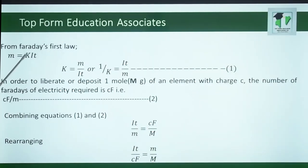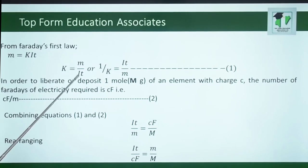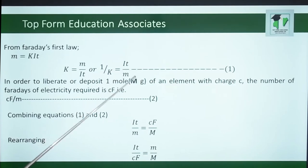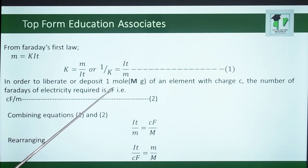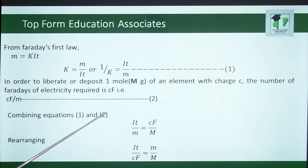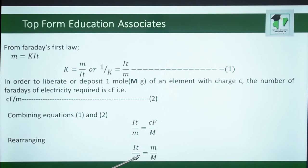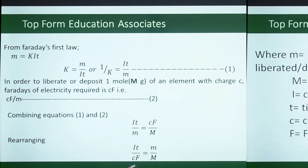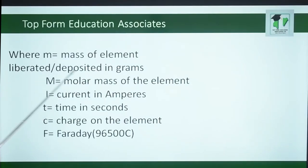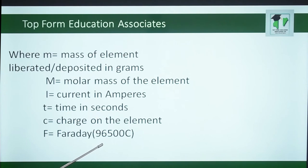From Faraday's first law, M equals KIT, and K equals M over IT, so 1 over K equals IT over M — call this equation 1. To liberate or deposit 1 mole of an element with charge C, the Faradays required is CF over M — call this equation 2. Combining equations 1 and 2: IT over M equals CF over capital M, which rearranges to IT over CF equals small m over M. Where m is the mass deposited in grams, M is the molar mass, I is current in amperes, T is time in seconds, C is the charge of the element, and F is Faraday's constant, 96,500 coulombs.